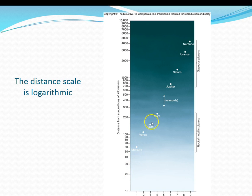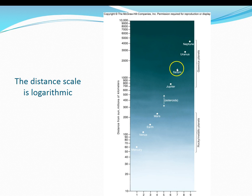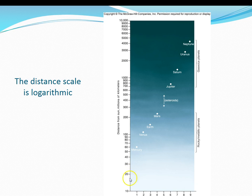Here are our inner planets: Mercury, Venus, Earth, and Mars. Then we have the asteroid belt. And then our Jovian, or outer planets, are Jupiter, Saturn, Uranus, and Neptune. Please note that this scale is logarithmic because the distance is so great.